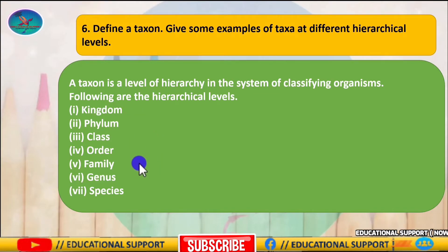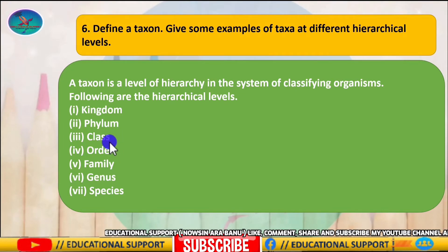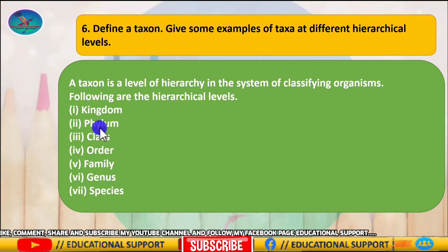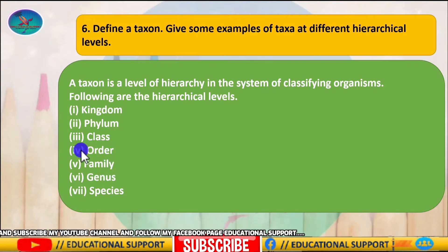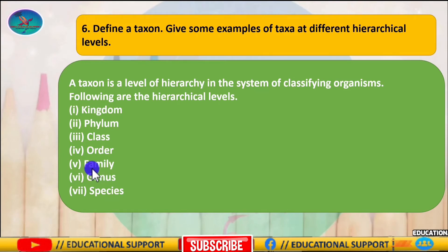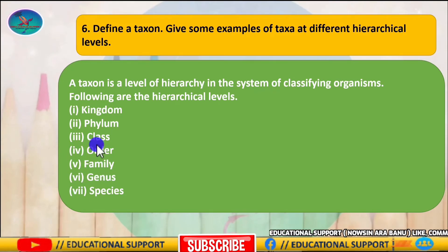For example, all insects form a taxon. The taxon of class category for birds is Aves, and the taxon of phylum category for birds is Chordata. The degree of relationship and the degree of similarities vary with the rank of the taxon. Individuals of a higher rank, such as order or family, are less closely related than those of a lower rank, such as genus and species.